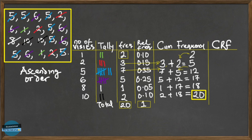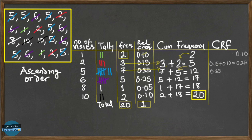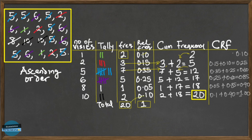Now for the cumulative relative frequency: the first value is simply 0.10 — there are no relative frequencies before it. For 2 visits, we add 0.10 + 0.15 = 0.25. For 5 visits, we add 0.25 + 0.35 = 0.60. We continue this pattern — summing all relative frequencies up to each given value — for all remaining rows.